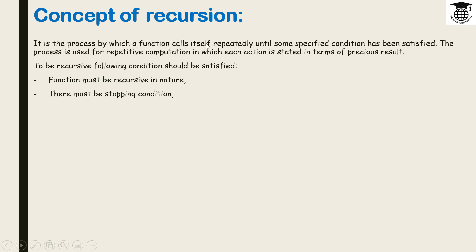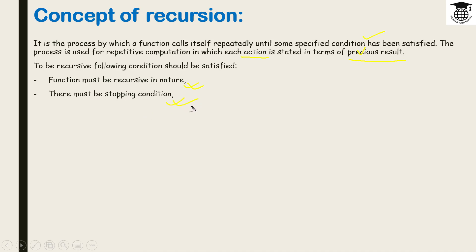Recursion is the process by which a function calls itself repeatedly until some specified condition has been satisfied. The process is used for repetitive computation in which each action is related to the previous result. The recursive function has a stopping condition, and when that stopping condition is met, the recursion ends.